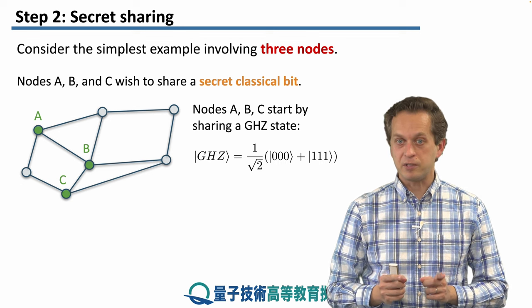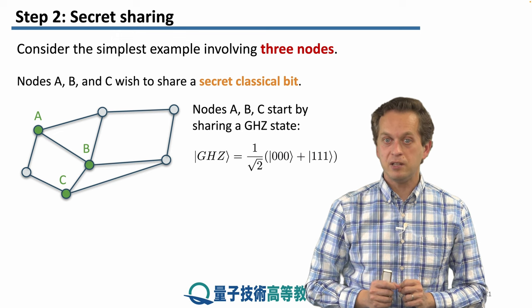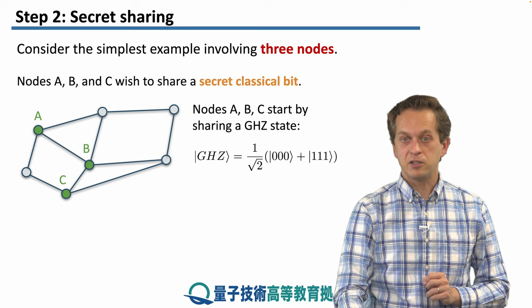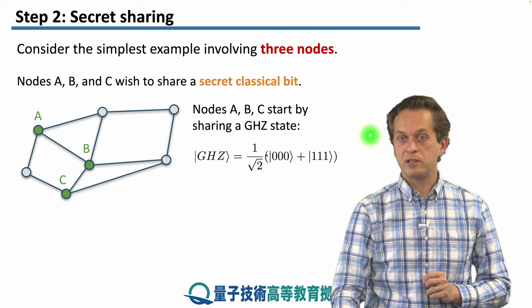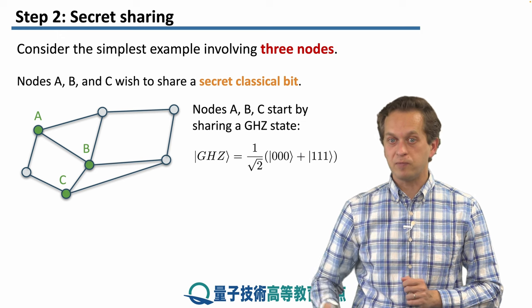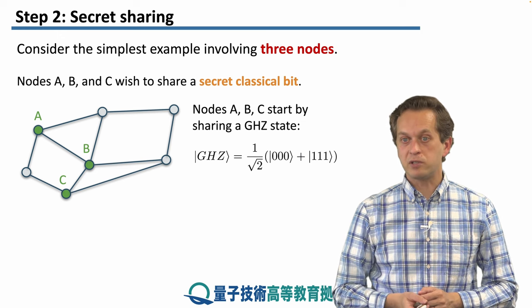First, this is how the recipe starts. First, nodes A and B, they prepare a shared GHZ state. The GHZ state, just to remind you, is an equal superposition where all the states are zero plus all the states are one. In this case we're only considering three nodes, so we've got three zeros plus three ones.